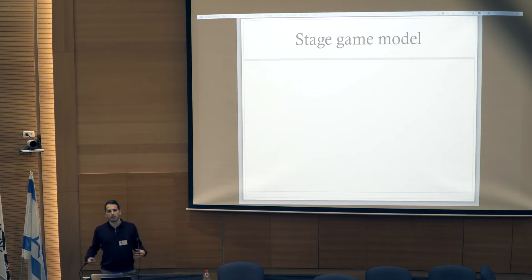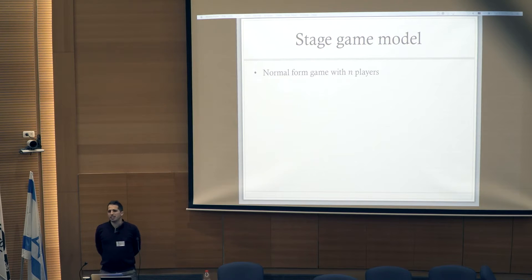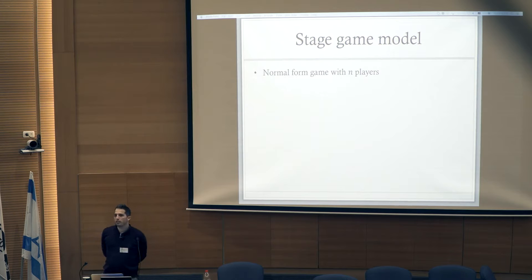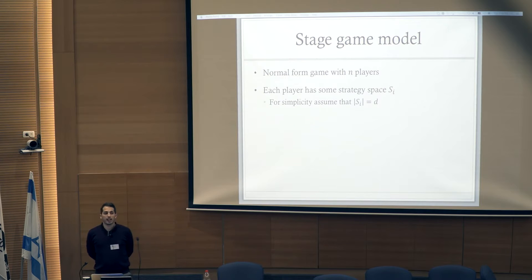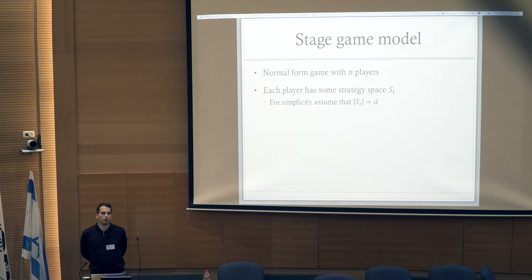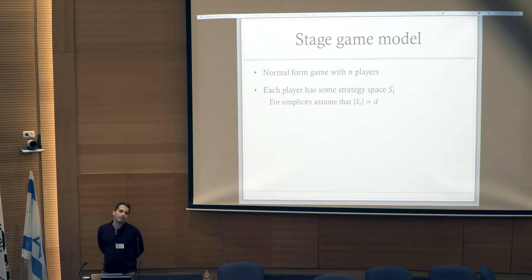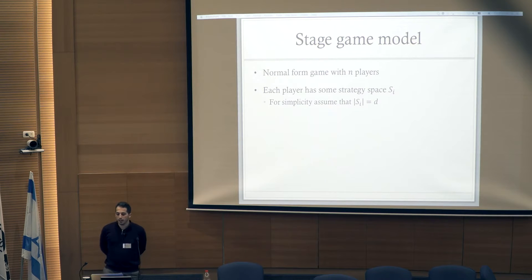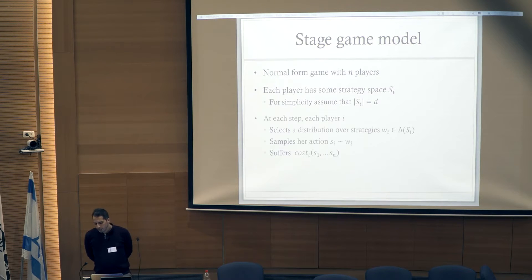I will assume there is a stage game that is repeated over time — a normal form game with n players, for instance a routing game. Each player has a strategy space denoted by S_i. In the case of routing games, you can think of these as the possible paths from source to destination. For simplicity, I assume all players have the same number of strategies d.